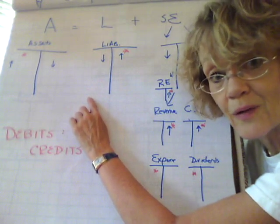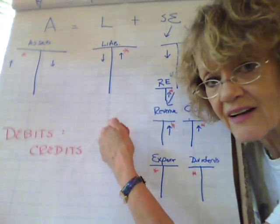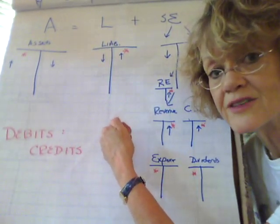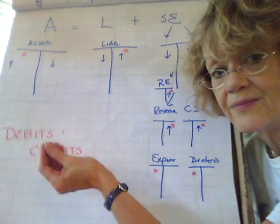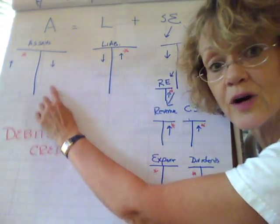It would take the opposite. So if it was a credit it would take a debit to accounts payable to pay off the table. But we wouldn't buy the table again, so the other side of that would be a credit to what? Cash. So it'd be a debit to accounts payable and a credit to cash.